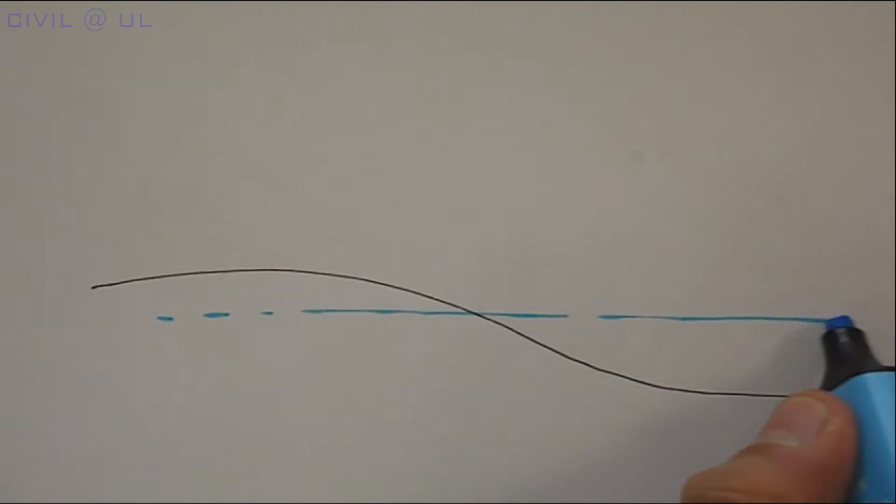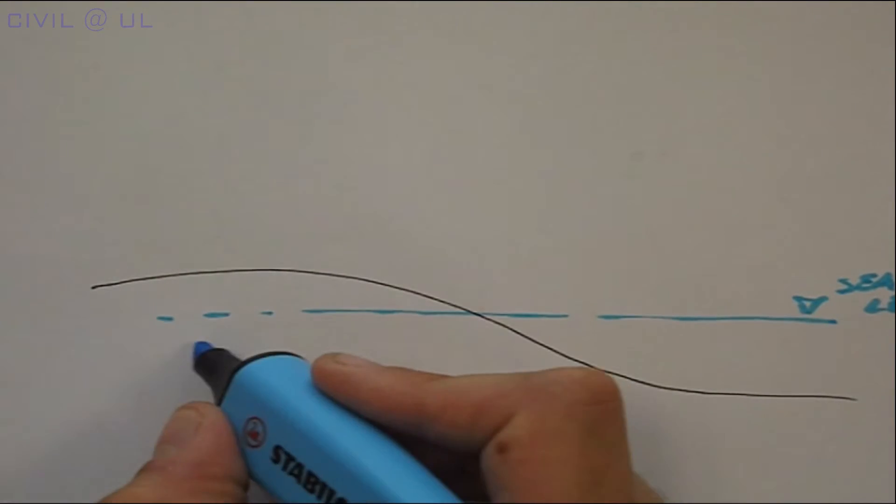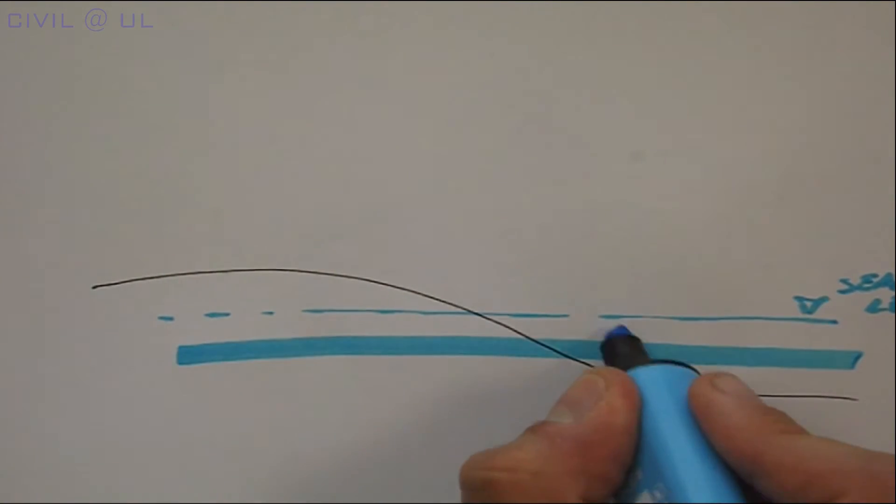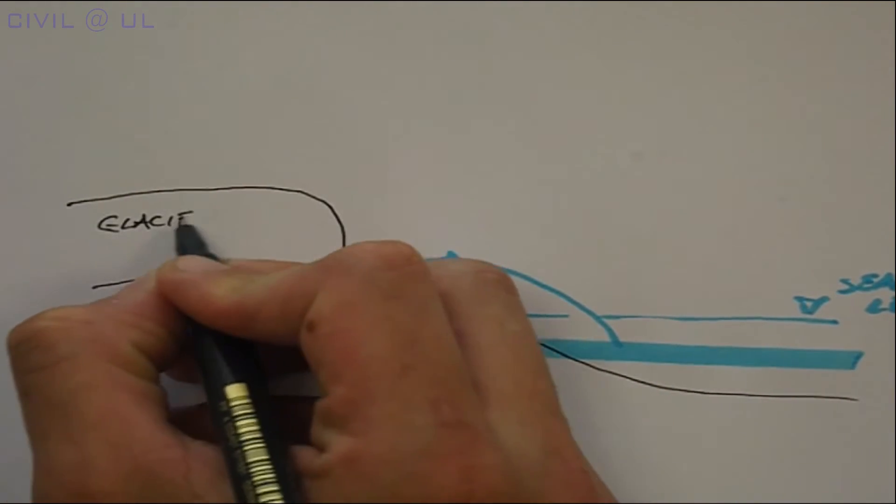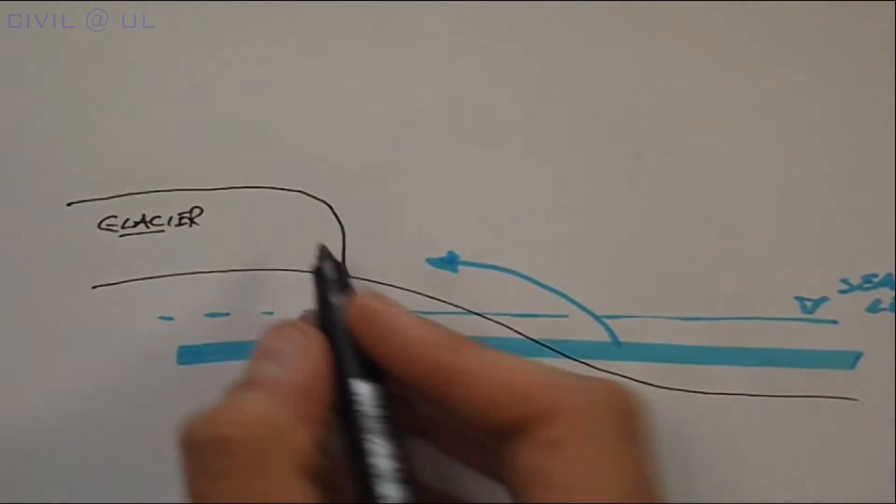Over the past two million years, the earth has experienced alternating periods of warming and cooling. When the earth's surface cools, for example, much of the water is taken up in ice, forming glaciers.